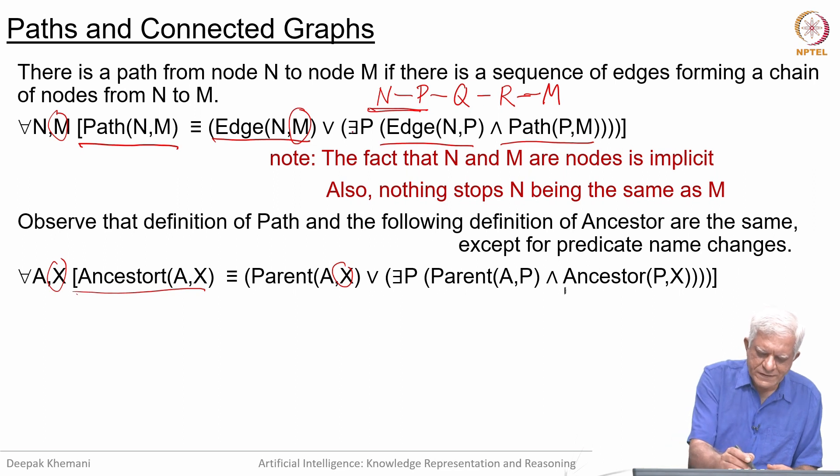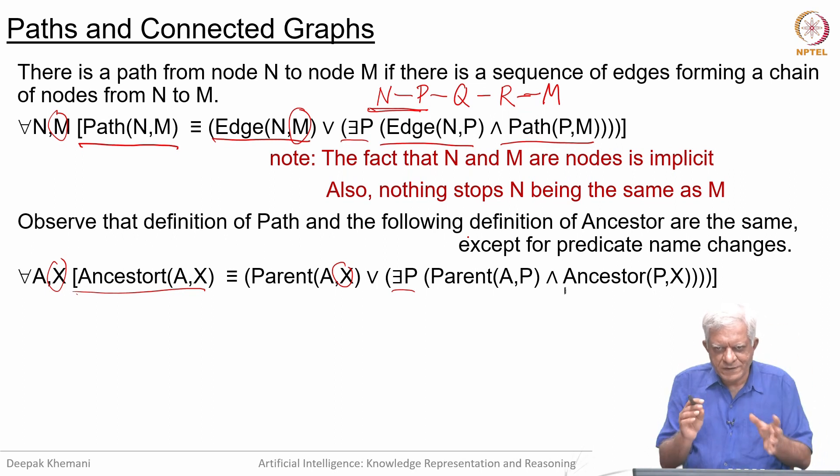Both have the same existential clause and both have those two components, one of them which is a recursive part and one of them is the initial part. If we were to draw a family tree we could talk about paths. We are thinking of them as graphs.